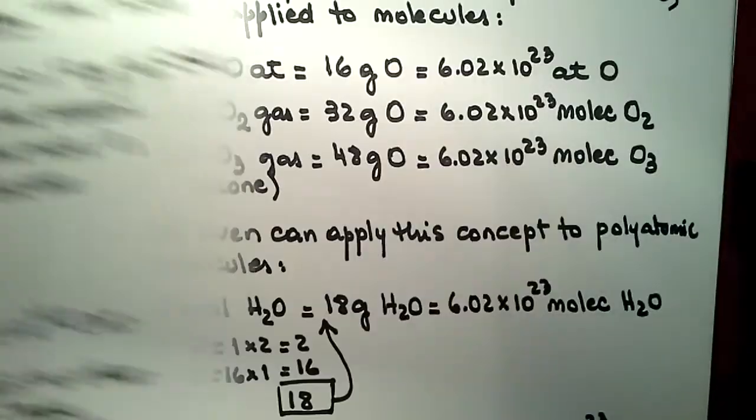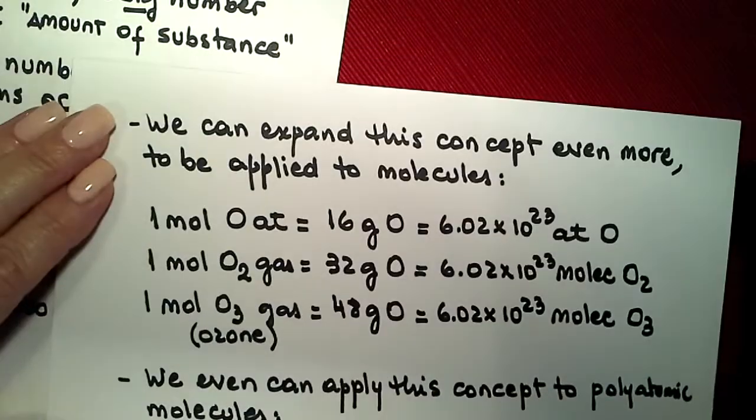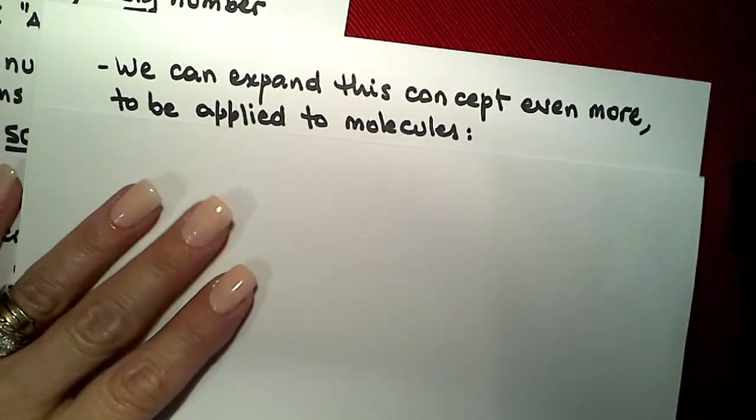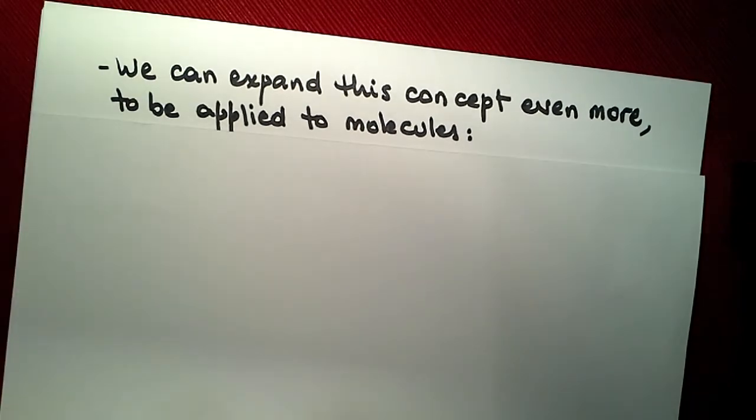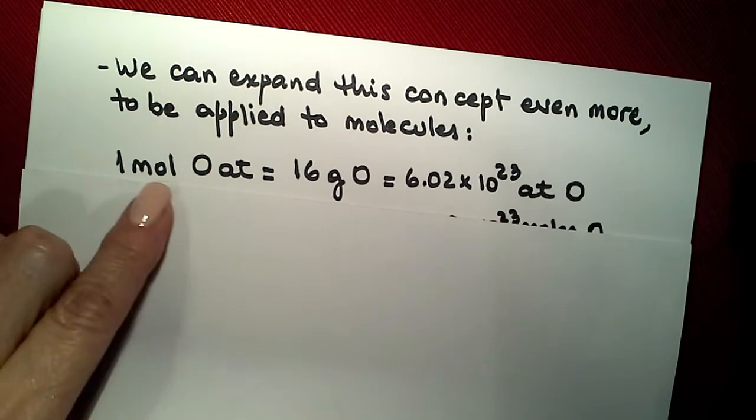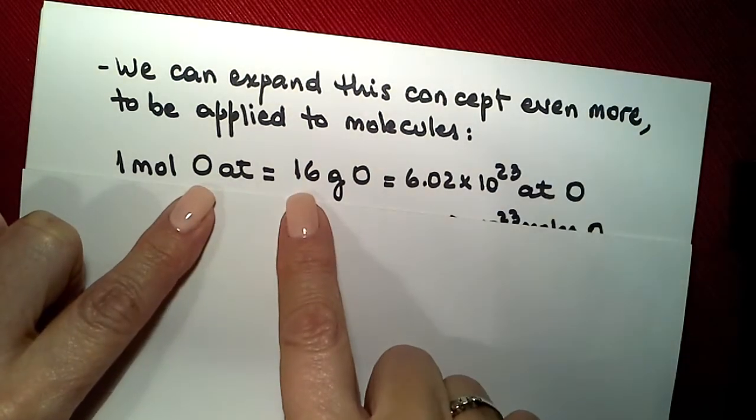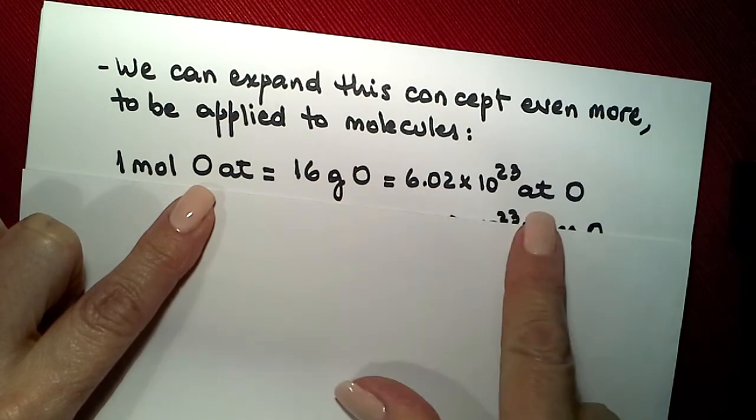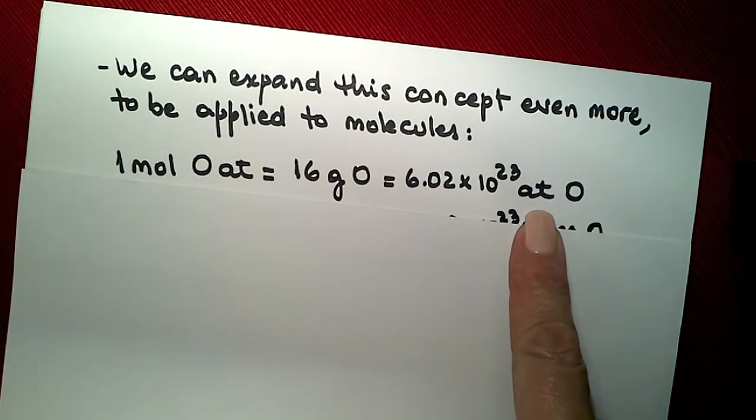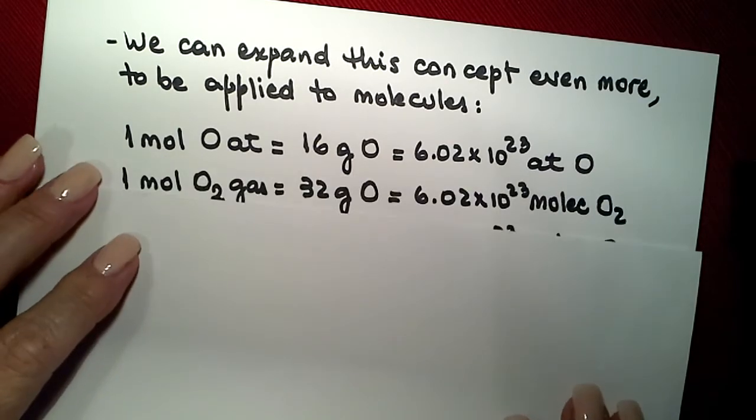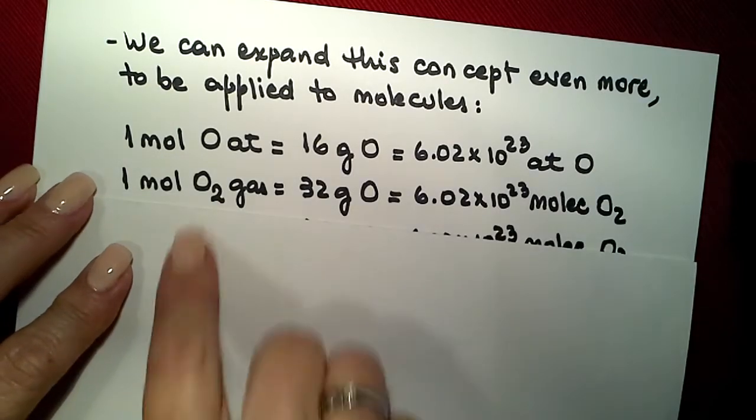So, the concept of the mole can be expanded even to molecules. When we have, for example, one mole of atoms of oxygen, we said that we express the mass of the periodic table of that element in grams, and we are going to have one mole of 6.02 times 10 to the 23rd atoms of oxygen. But, we can expand that to oxygen gas.